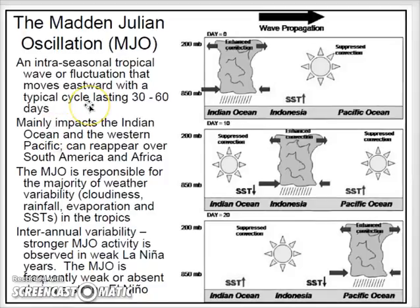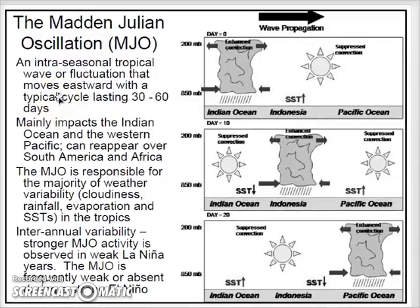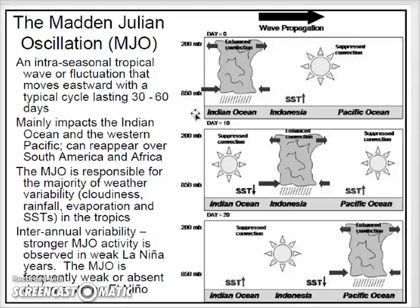The Madden-Julian Oscillation is an intra-seasonal tropical wave that moves eastward with a tropical cycle lasting 30 to 60 days — sometimes described as one to three months. It mainly impacts the Indian Ocean and Western Pacific and can reappear over South America and Africa. The MJO is responsible for the majority of weather variability — including rainfall, evaporation, and sea surface temperatures in the tropics. Stronger MJO activity is observed in weak La Niña years, while the MJO is frequently weak or absent during a strong El Niño.